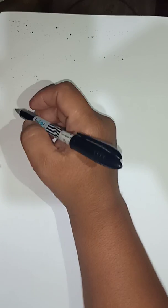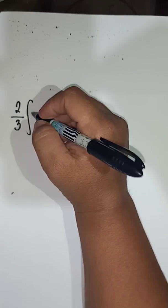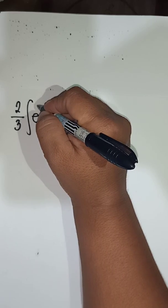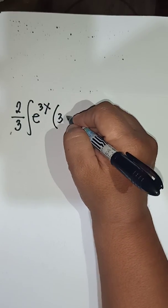From that, we have—write again the last part—two-thirds, e^(3x), 3dx.